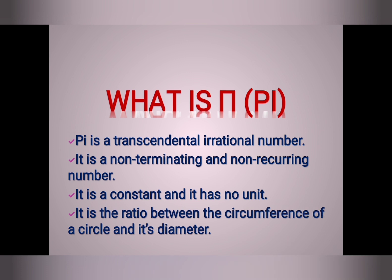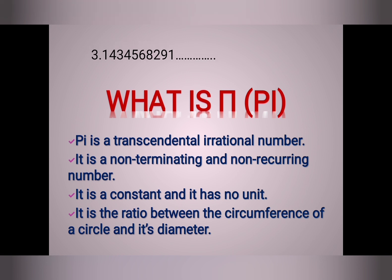Pi is a constant and it has no unit because pi is the ratio of two same physical quantities. It is the ratio between the circumference of a circle and its diameter. A non-terminating and non-recurring number has no limitation and no repetition of numbers after the decimal point.